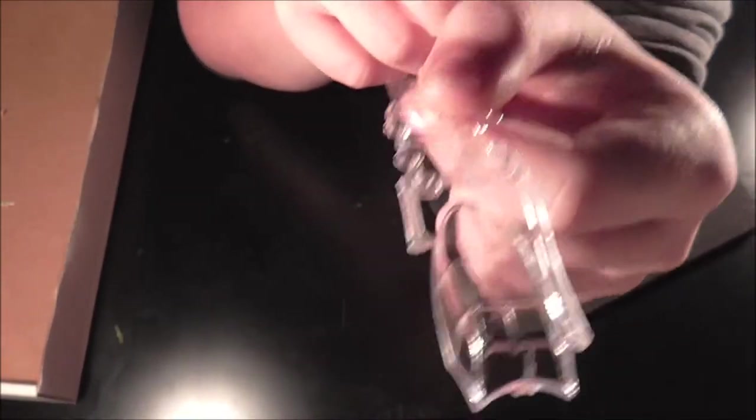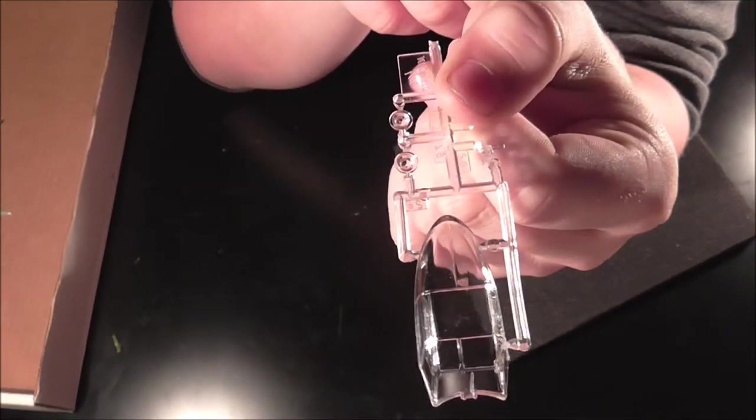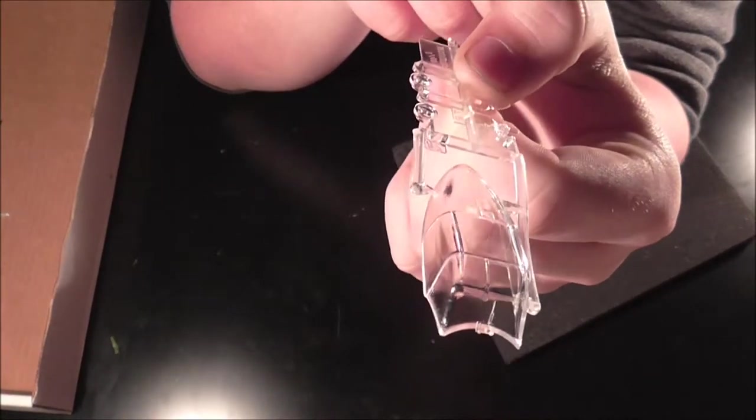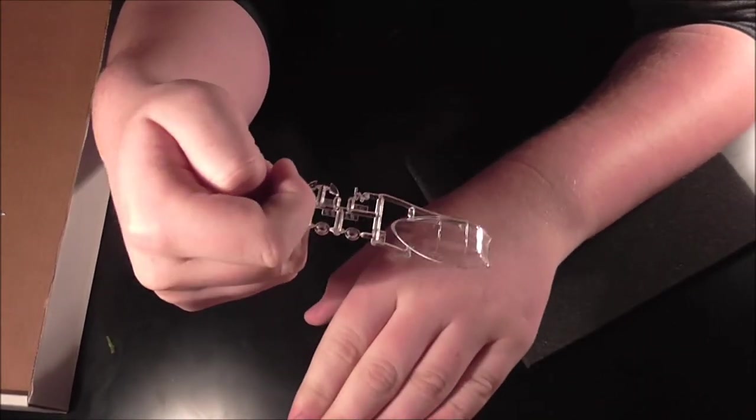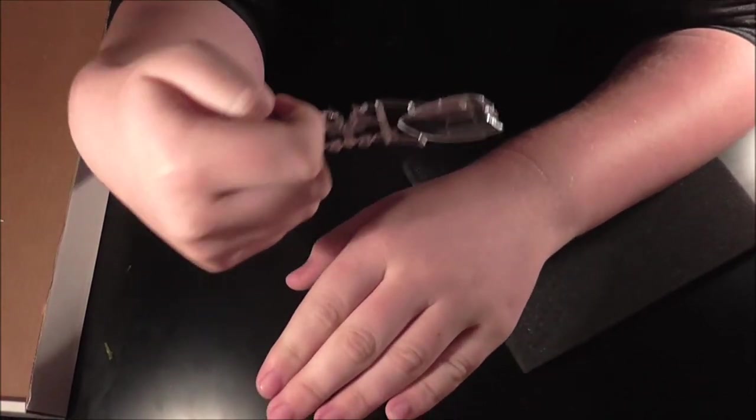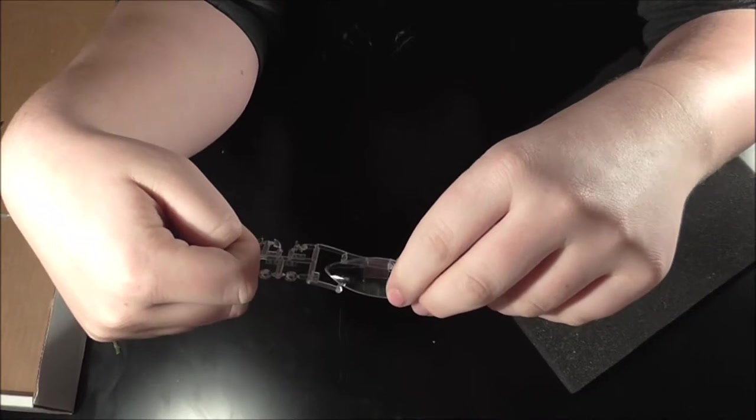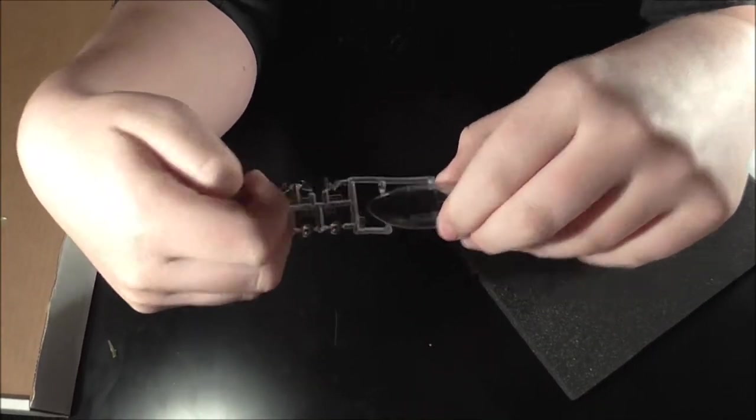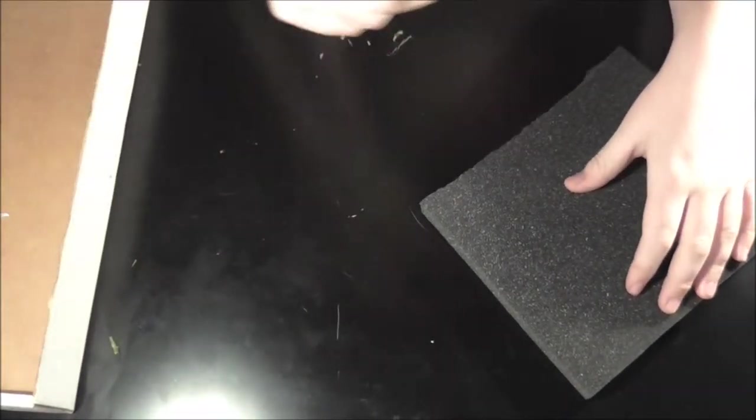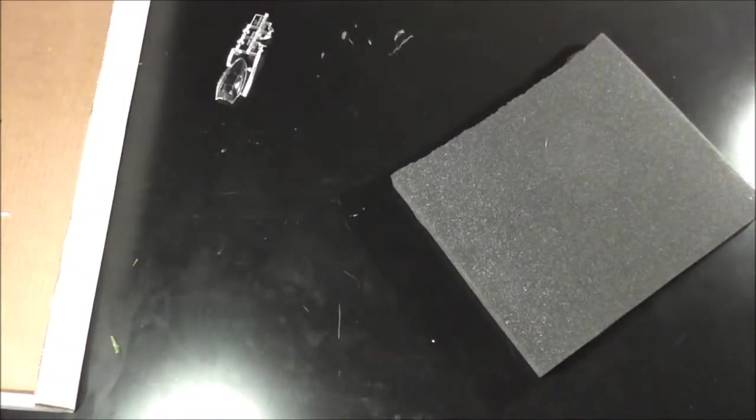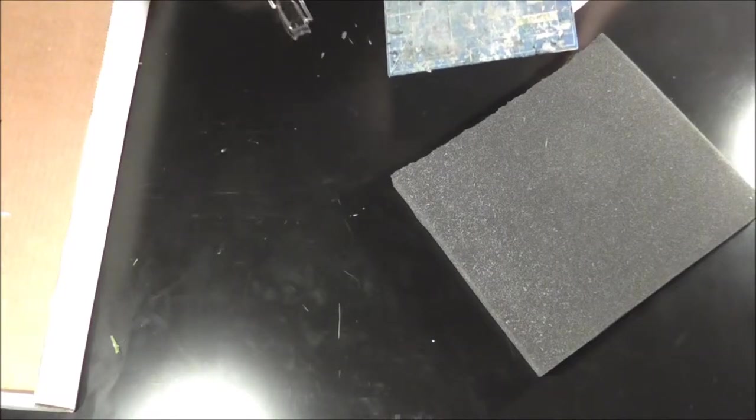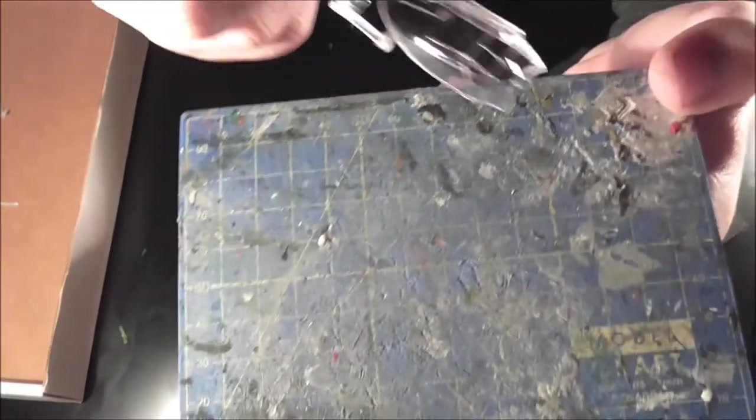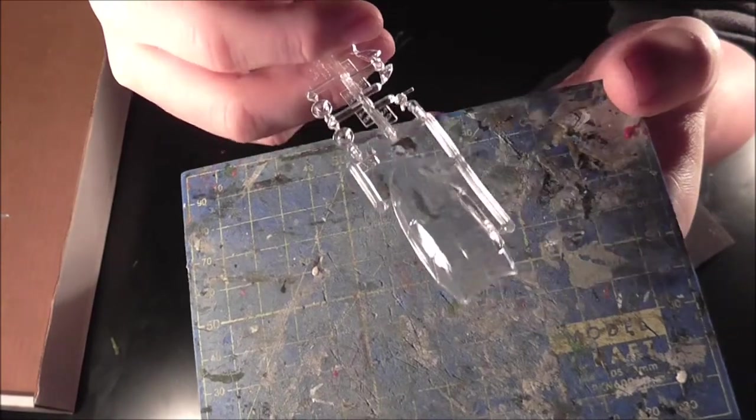So. There is the main canopy and the windscreen. It has a bit of distortion. I think. Yeah. Actually quite a lot. Looking at it through there. Can't really find anything to show it with. That'll do. So if you look through there. You can see it's a bit off.